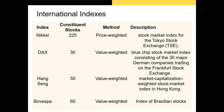Outside the US there are many indexes that track the stocks of various markets. In Japan, we have the Nikkei, which tracks 225 stocks listed on the Tokyo Stock Exchange. The DAX tracks 30 large blue chip stocks listed on the Frankfurt Stock Exchange in Germany. The Hang Seng tracks 50 stocks listed on the Hong Kong Stock Exchange. And finally, we have Bovespa, which is an index that tracks 60 different Brazilian stocks.